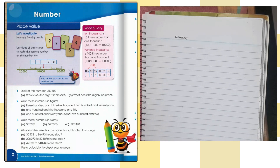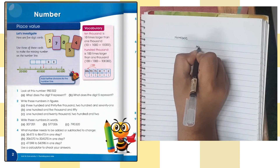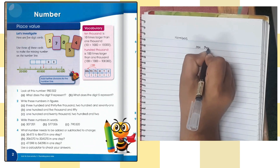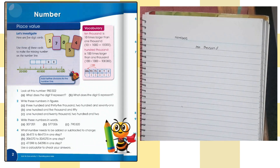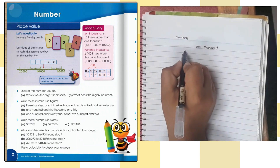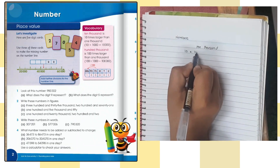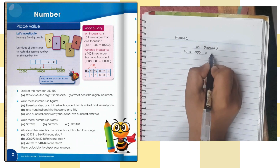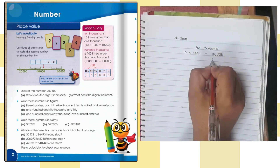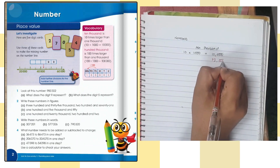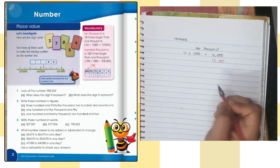Question number one: if you look at your vocabulary part, they mention the number ten thousand. What is ten thousand? The definition mentioned in your vocabulary is that it is ten times larger than one thousand. So ten times larger than one thousand becomes ten thousand. For example, seventy-two thousand is an example of ten thousand.